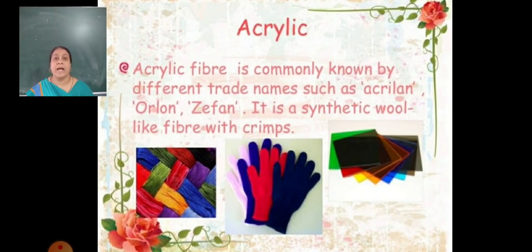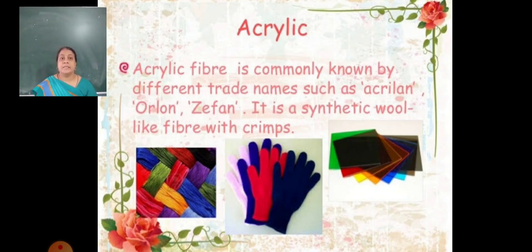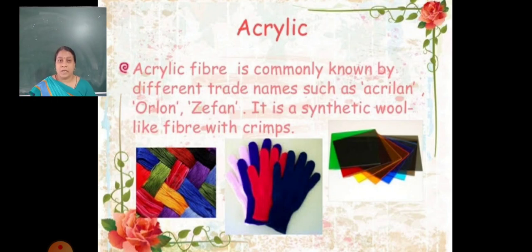Now let's look at acrylic. Acrylic fiber is commonly known by different trade names such as Acrylon, Orlon, and Zefran. It is a synthetic wool — its texture looks like wool, that's why it is called a substitute for wool. Similarly, rayon is the substitute for silk.